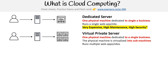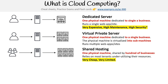Then came virtual private servers. We still had one physical machine dedicated to a single business, but we figured out how to virtualize it into multiple machines. Now we could better utilize that physical server by running multiple apps — instead of buying four different servers for four different apps, we could run four web apps as four virtual sub-machines. Then we had shared hosting, which made it easier for anyone building websites. One physical machine was shared by hundreds of businesses.